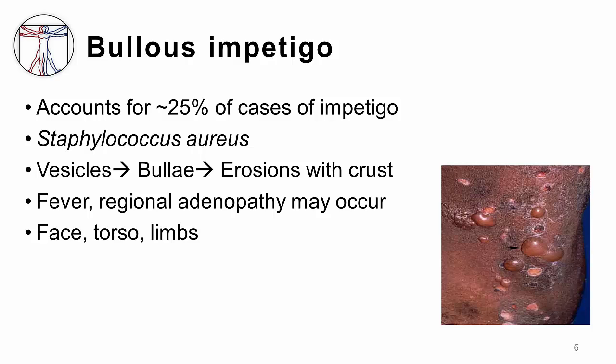Bullous Impetigo is almost always caused by Staph aureus. It is characterized by vesicles that progress into fluid-filled bullae, which then rupture in a few days to form light brown crusts at the borders of erythematous erosions. Systemic symptoms such as fever and regional lymphadenopathy may occur, and the torso can be affected in addition to the face and limbs, making this form sometimes more extensive than non-bullous Impetigo.